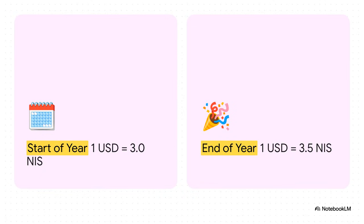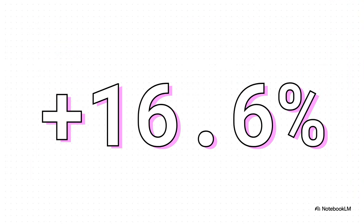Okay, let's use a real example. Let's say at the start of the year, one U.S. dollar buys you three Israeli shekels. But by the end of the year, that same dollar gets you three and a half shekels. Just looking at that, it seems obvious. The dollar got stronger. It buys more stuff, right? And if you do the quick math, that's a 16.6% jump for the dollar's value.